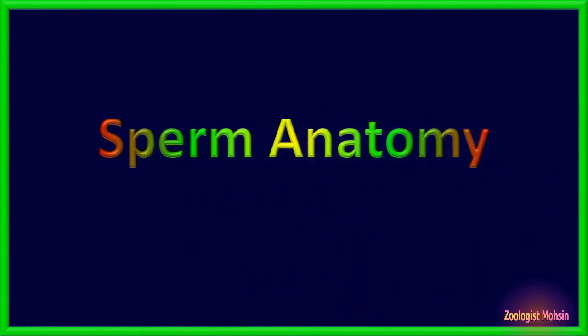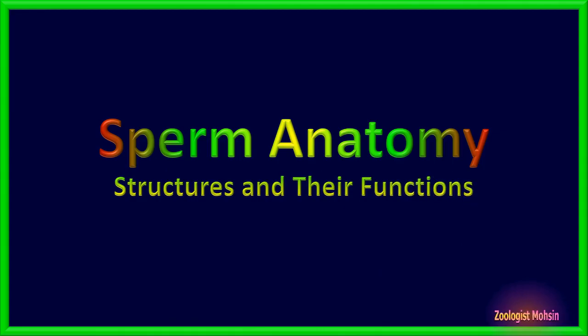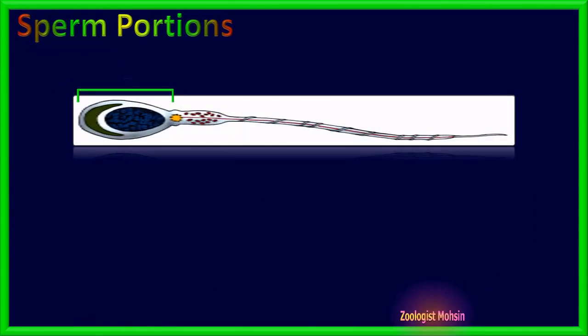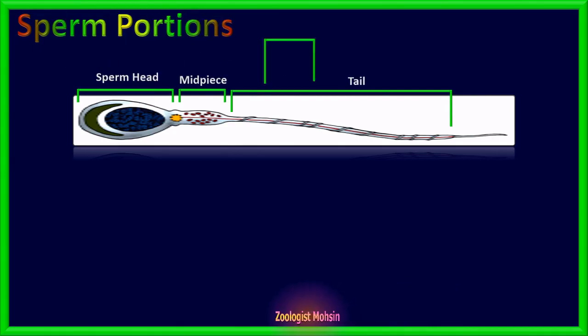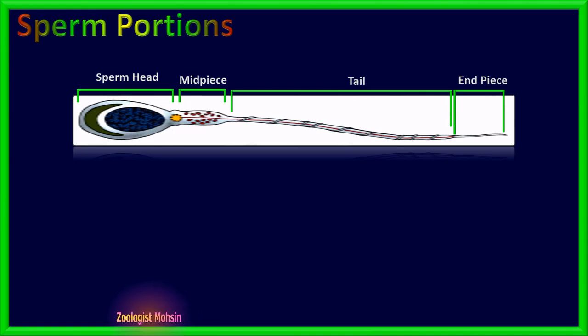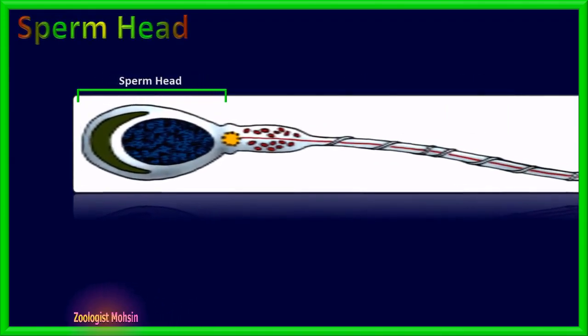Sperm anatomy: structures inside the sperm and their functions. On the basis of morphology, each sperm cell is divided into four portions: head, midpiece, tail, and end piece. Let's elaborate the structures present in each portion with their functions.